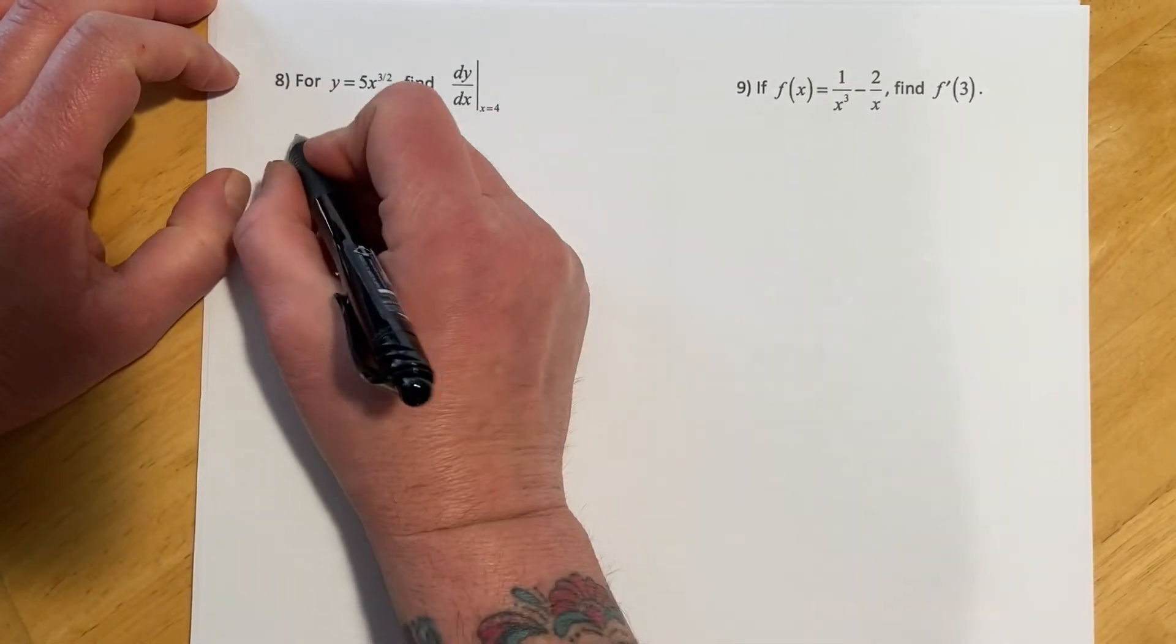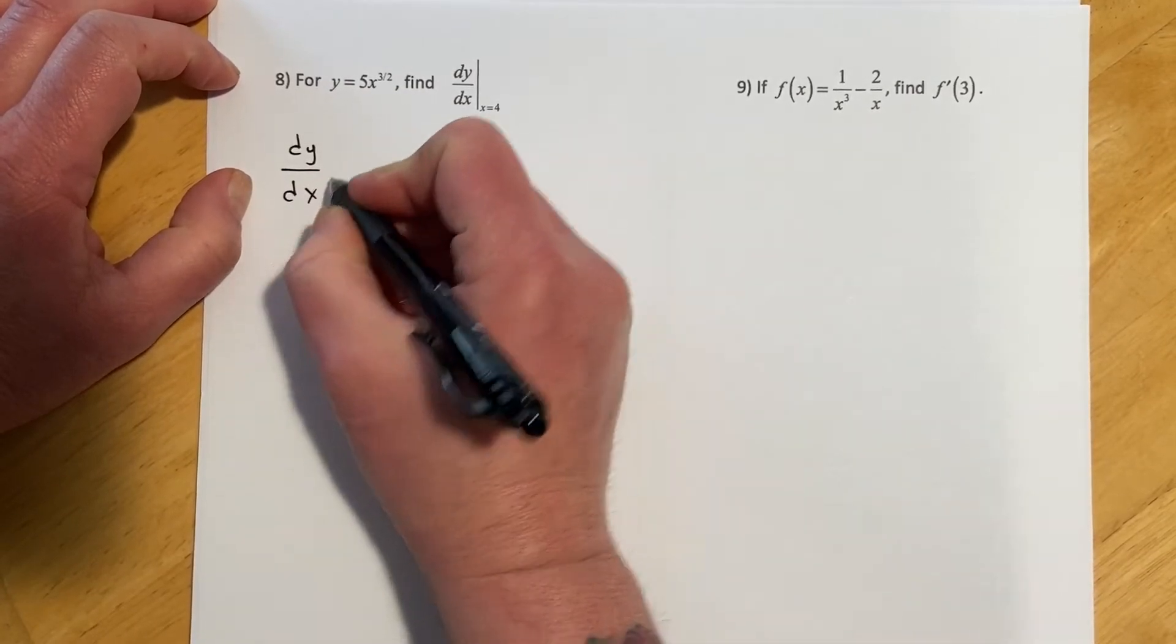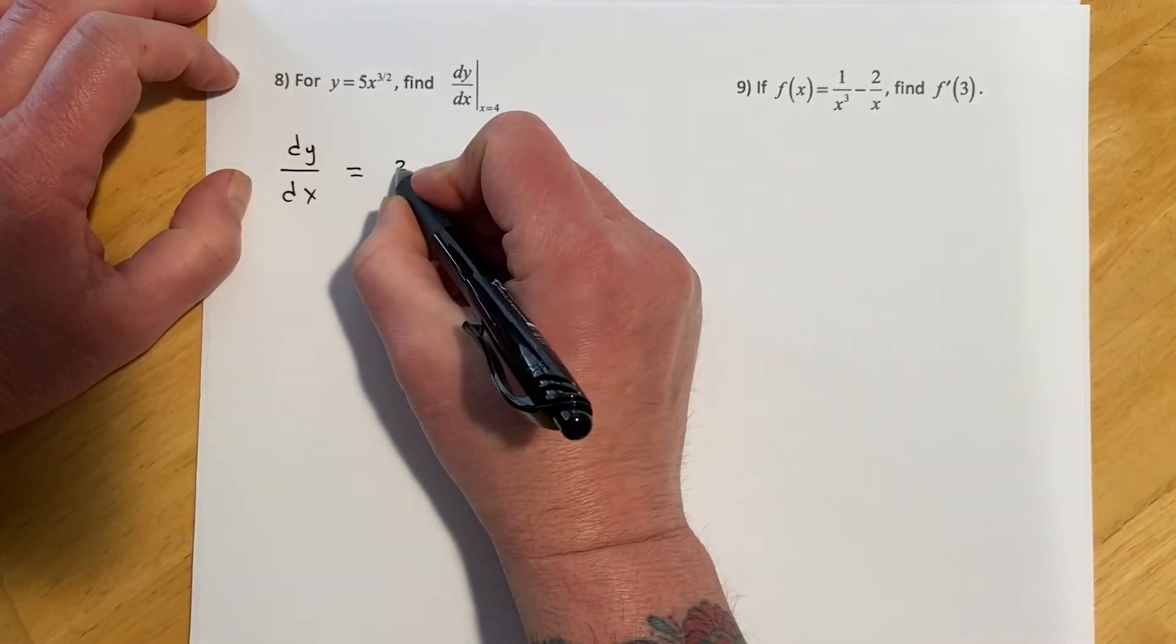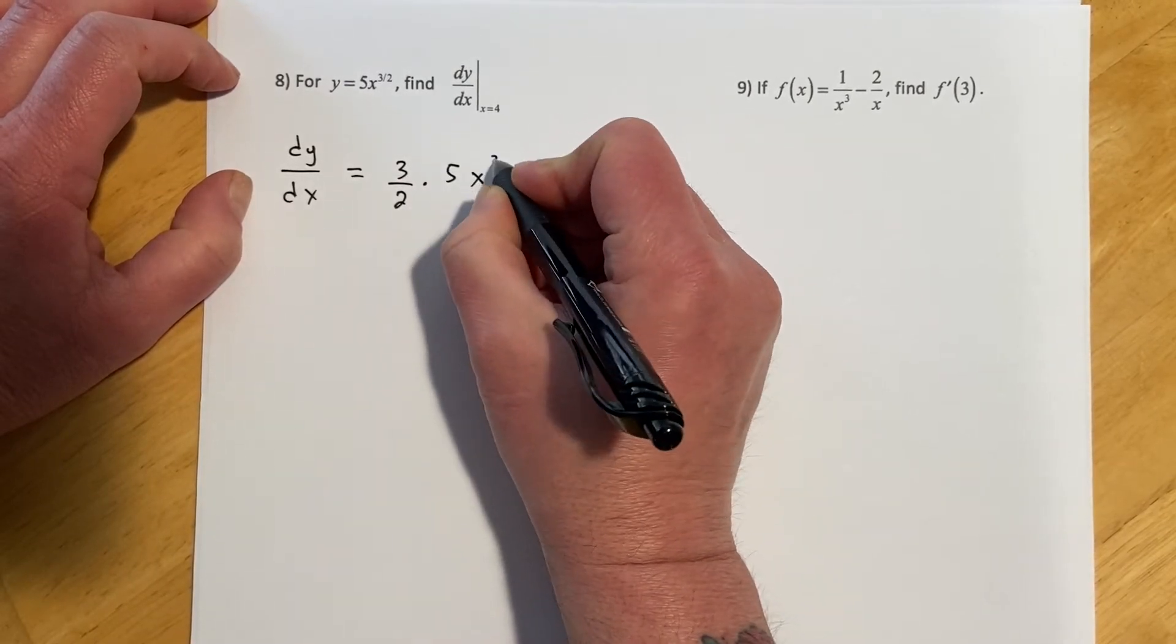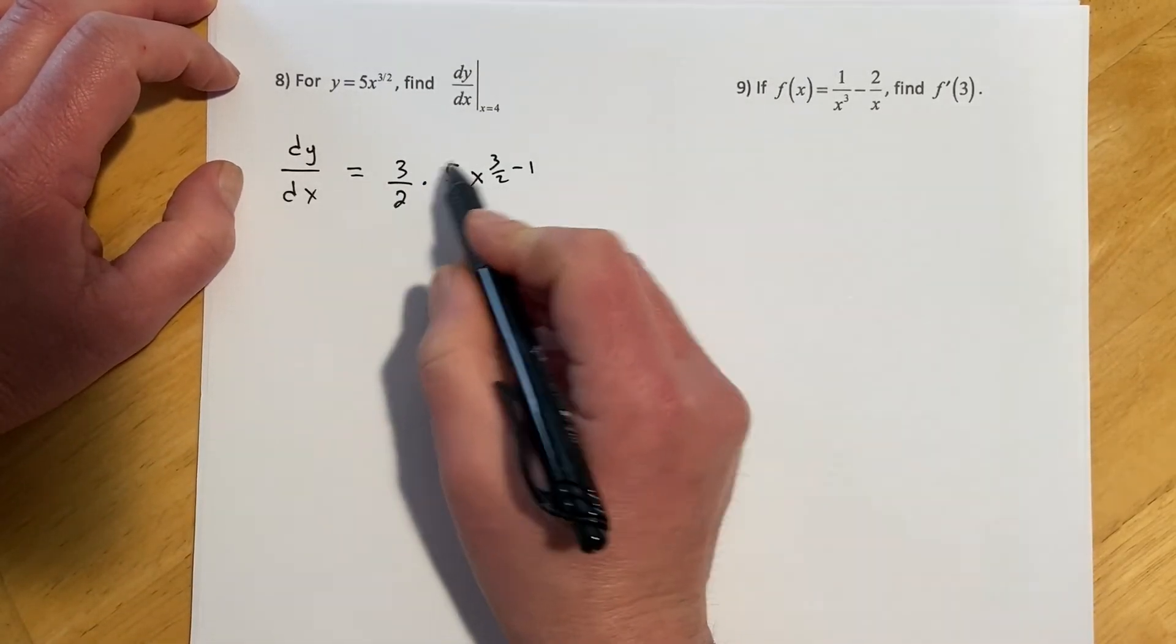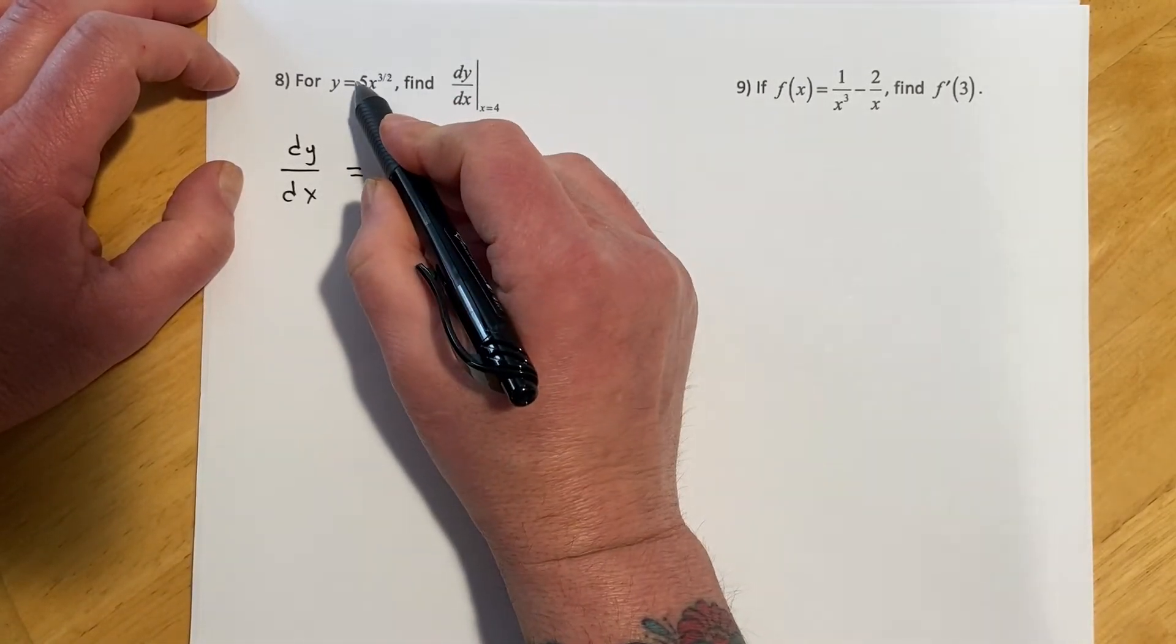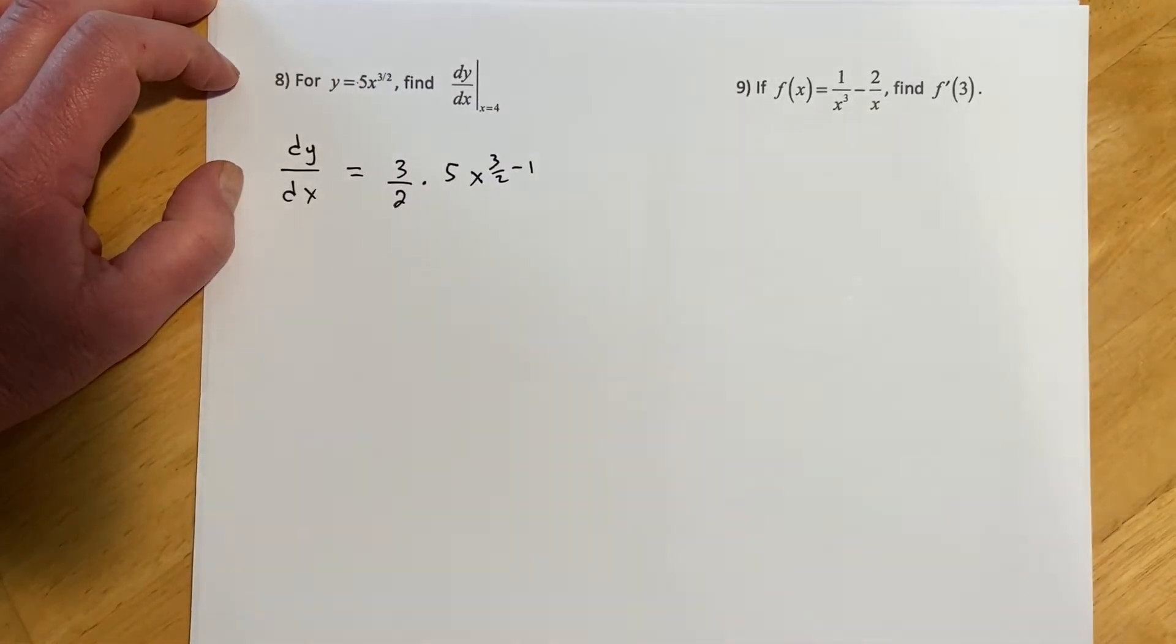So we're given this, so first thing I have to do is find the derivative of it so I can evaluate. So dy/dx is going to equal 3 halves times 5x to the 3 halves minus 1. Remember it just goes here times the exponent times the thing in front and then minus 1 off the exponent.